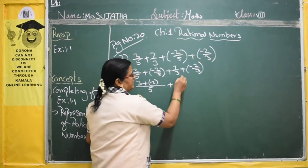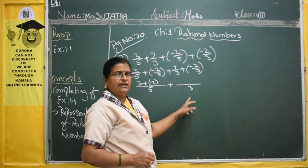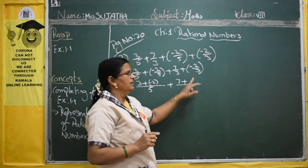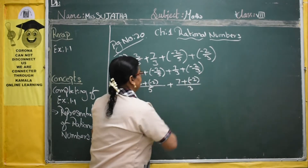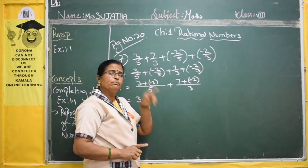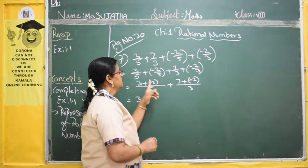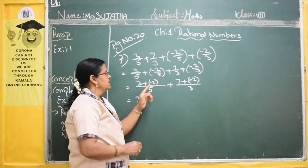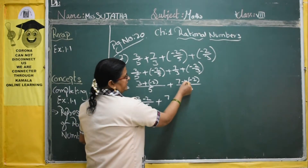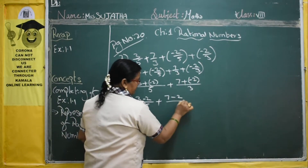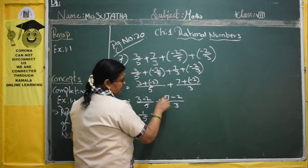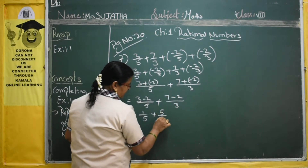Again plus. The denominator is 3. 3 divided by 3 is 1. 1 into 7 is 7. Plus, 3 divided by 3 is 1. 1 into minus 2 is minus 2. Now, when you are opening the bracket, you should multiply the signs. Plus into minus is minus. So we get: minus 2/5, plus 7, minus plus into minus gives minus 2/3. That is, 3 minus 2 equals 1/5, plus 7 minus 2 equals 5/3.